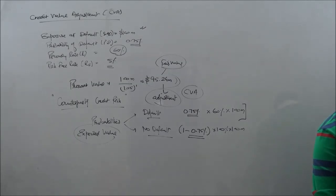So my numbers are 0.75% multiplied by 60% into 100. And then we have 1 minus 0.75% multiplied by 100. Now, these two would give me a value of.